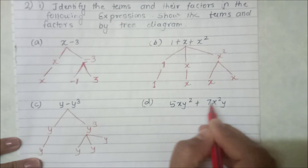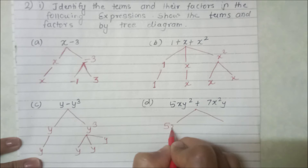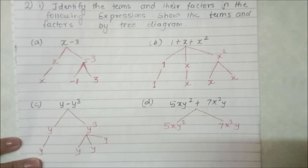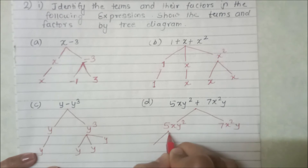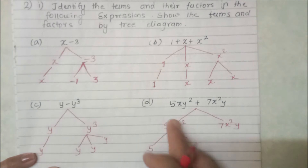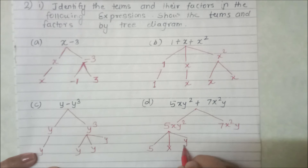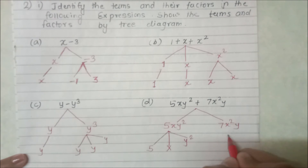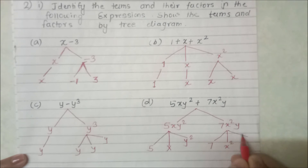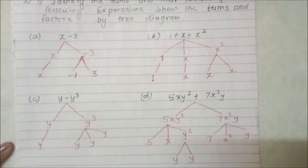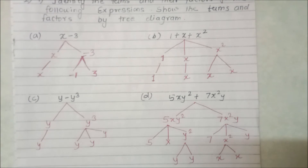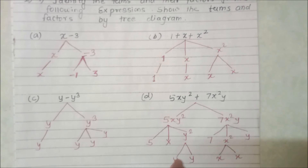Next expression has one operation, meaning two terms: 5xy square and 7x square y. For the term 5xy square, the factors are 5, x, y, and y — since y square means y into y. For the term 7x square y, the factors are 7, x, x, and y — since x square means x into x.